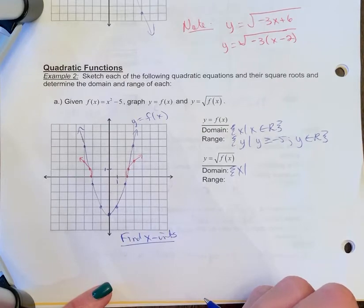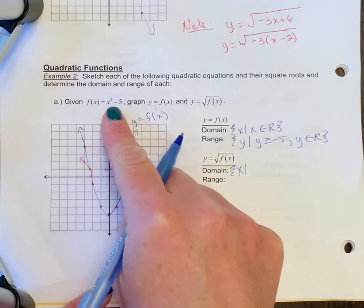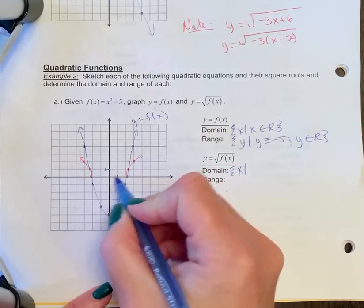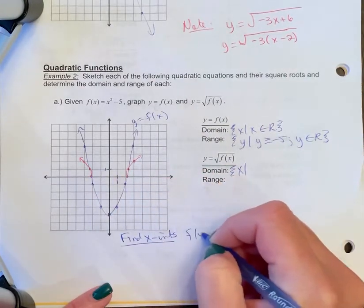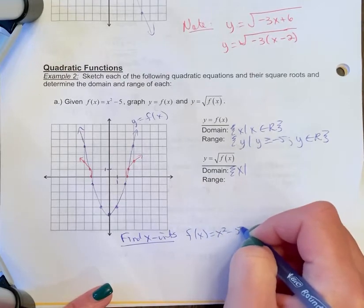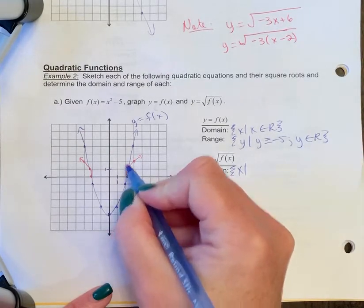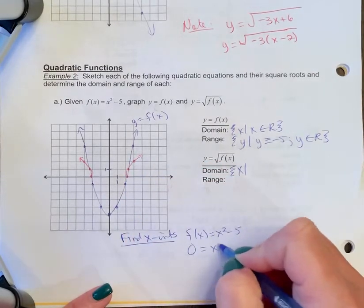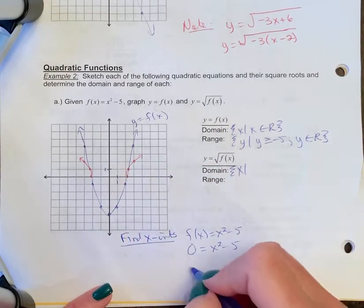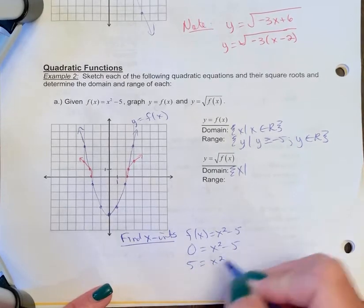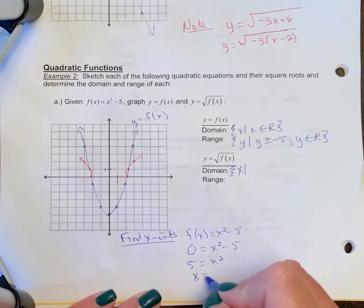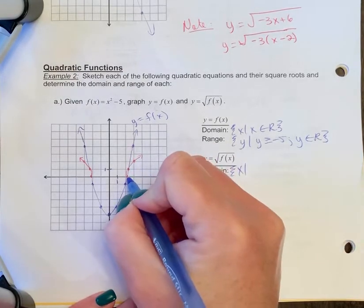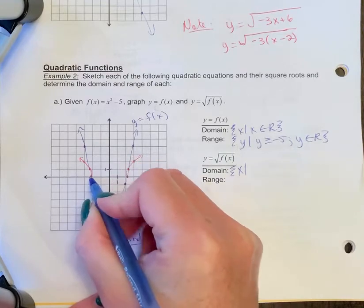Okay, now to find the x-intercepts, you can choose to let y equals 0 in the original f of x graph or the root graph because these are invariant points. So it's easier to use just f of x equals x squared minus 5 because the x-intercept of your parabola and the x-intercept of your root graph was the same. So we're going to let y equals 0. I move 5 to the other side. I square root both sides and x is going to equal plus or minus the square root of 5. So this is root 5. This is negative root 5.